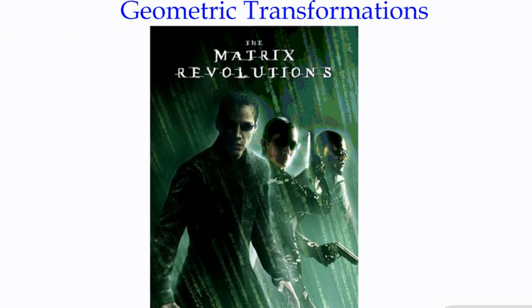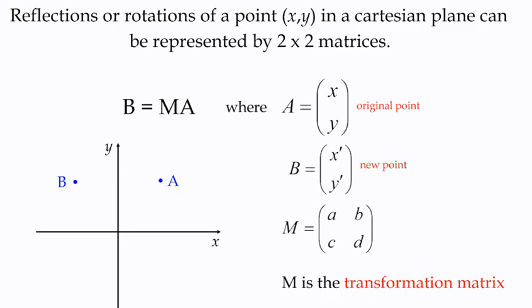One of the ways in which we can use matrices, certainly from a point of view of computing and graphics on a computer screen, is if we want to change the position of an object — either to translate it left or right, to rotate it, to reflect it — we can actually employ matrices in order to do that. So we're going to have a look at that just now, starting with the idea of a transformation matrix, which has the information in it to do a particular transformation.